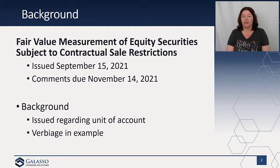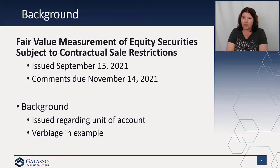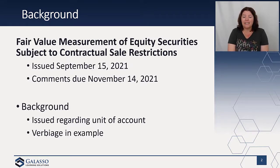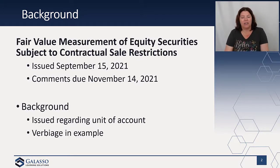There is an issue regarding the unit of account when these equity securities are subject to contractual sale restrictions, and how that impacts fair value — in particular, whether the unit of account impacts the fair value measurement. This specifically looks at an illustrative example where there are interpretation differences regarding whether the effects of contractual restrictions that prohibit the sale should be considered in measuring fair value. Some people apply a discount, adjusting from an identical equity security that's not subject to restrictions, whereas other stakeholders said that such a discount would be inappropriate based on Topic 820.